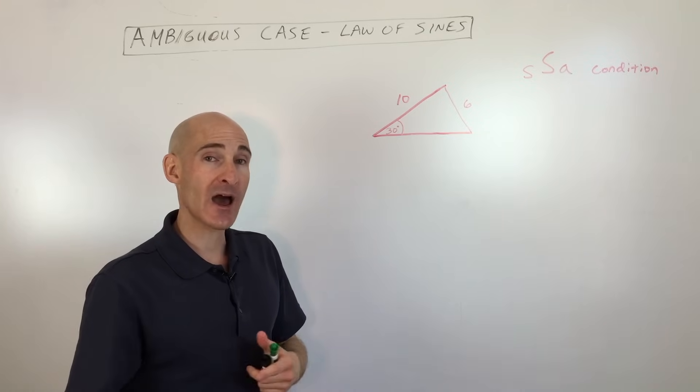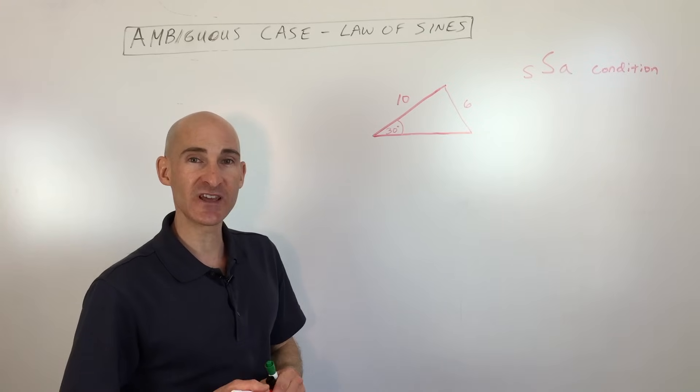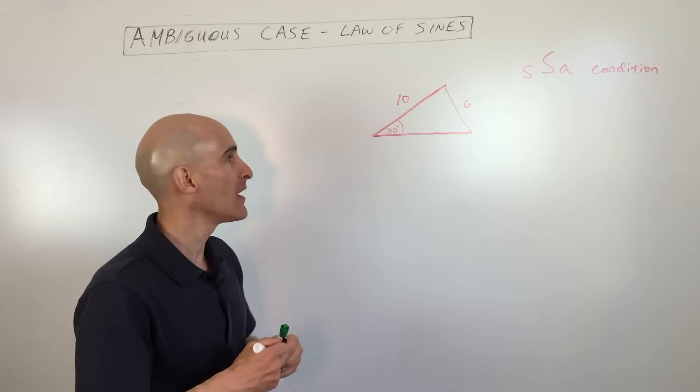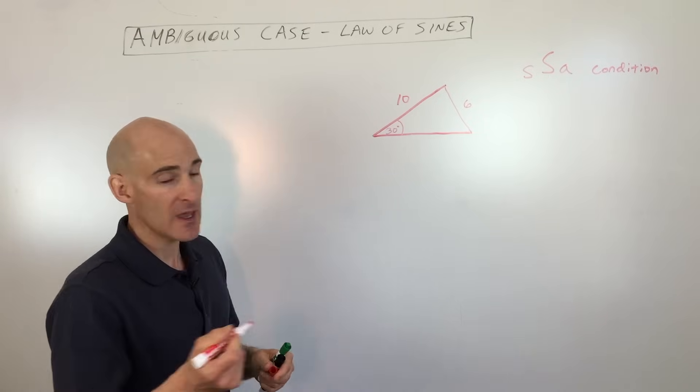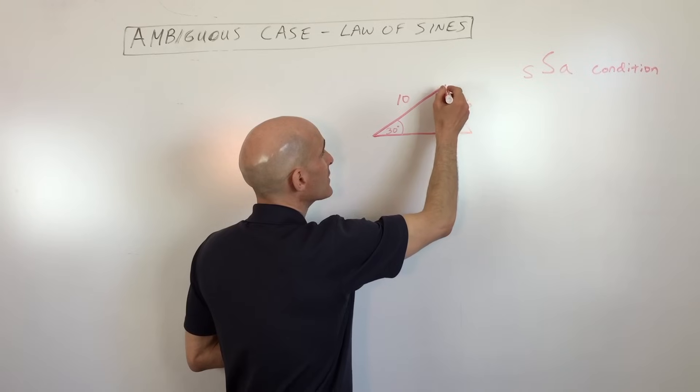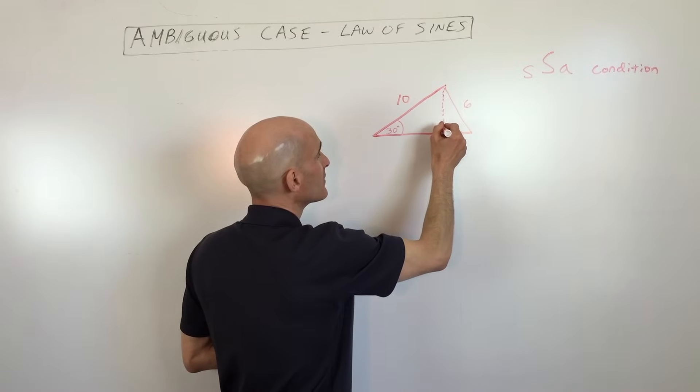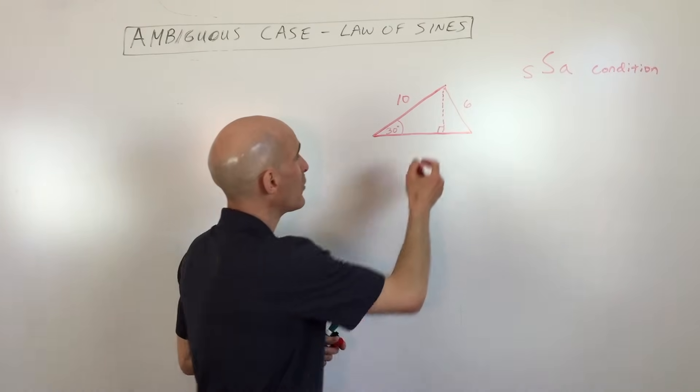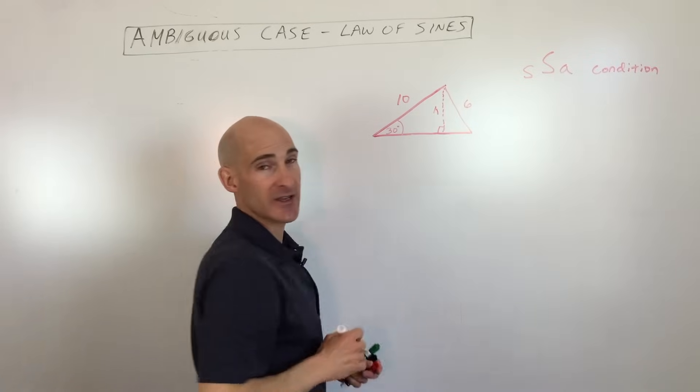So how do we know how many triangles there are, and how do we solve for those missing sides and missing angles? That's what we're going to talk about in this video. So the first thing you want to do is you want to drop a perpendicular like this, and you want to find out what that altitude is, or what that height is.